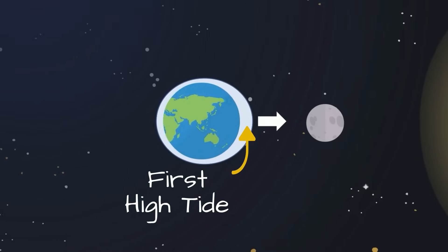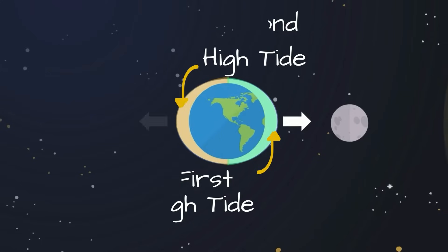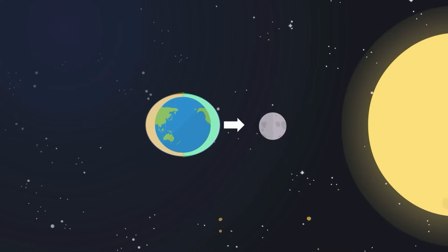The second high tide, or the bulge on the far side of the Earth, is caused by inertia. The second high tide is a result of a counterbalance to the pull of gravity from the moon. You can also think of the Earth as being squeezed and it bulging on both sides.